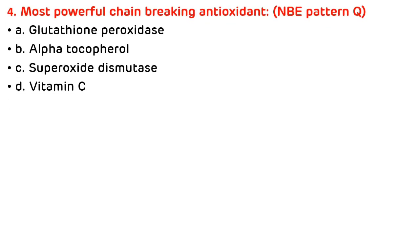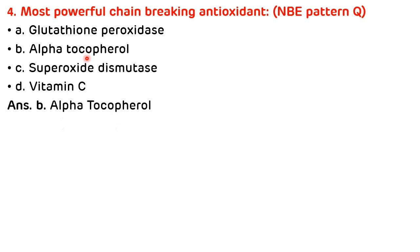MCQ 4: The most powerful chain-breaking antioxidant is — (A) glutathione peroxidase, (B) alpha-tocopherol, (C) superoxide dismutase, (D) Vitamin C. The most powerful chain-breaking antioxidant is alpha-tocopherol. Other chain-breaking antioxidants include superoxide dismutase and catalase. The correct answer is B.